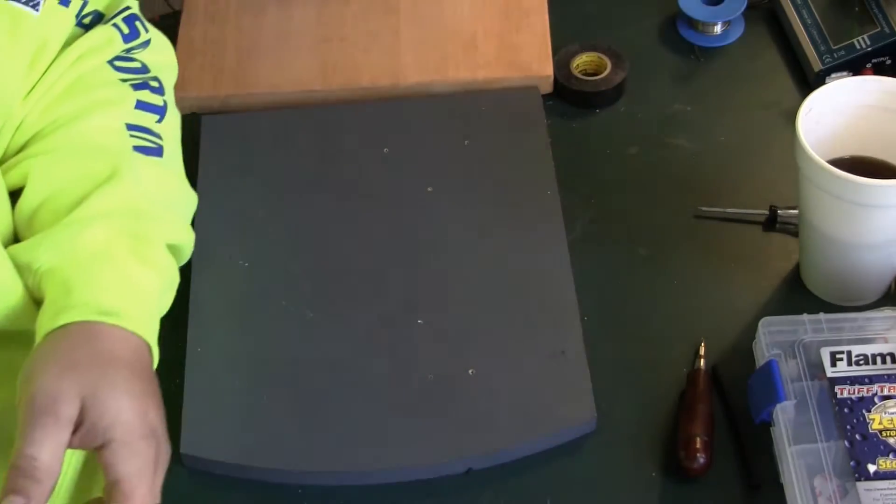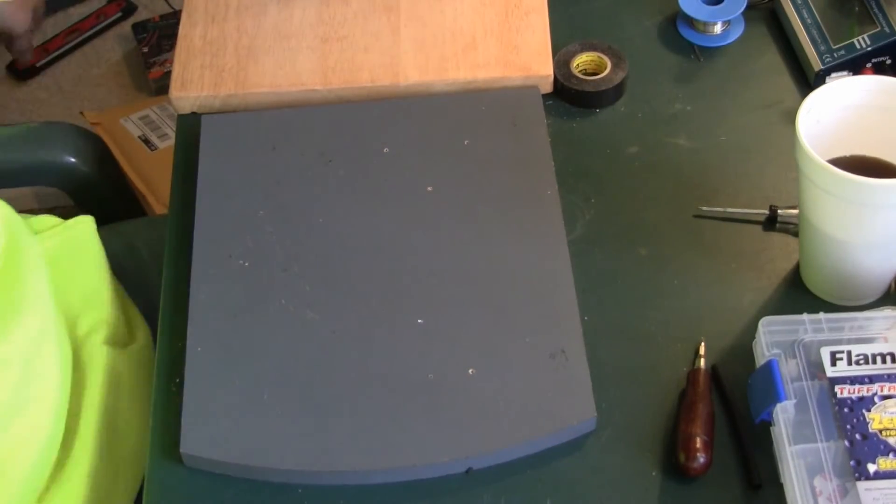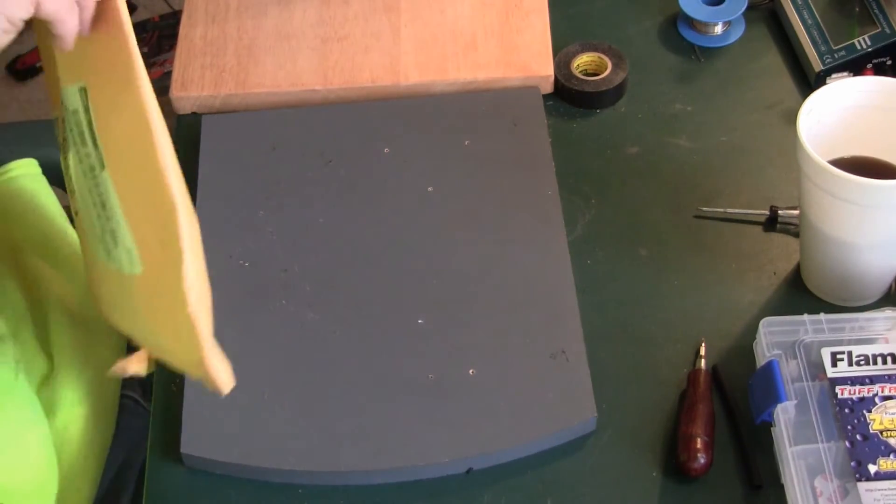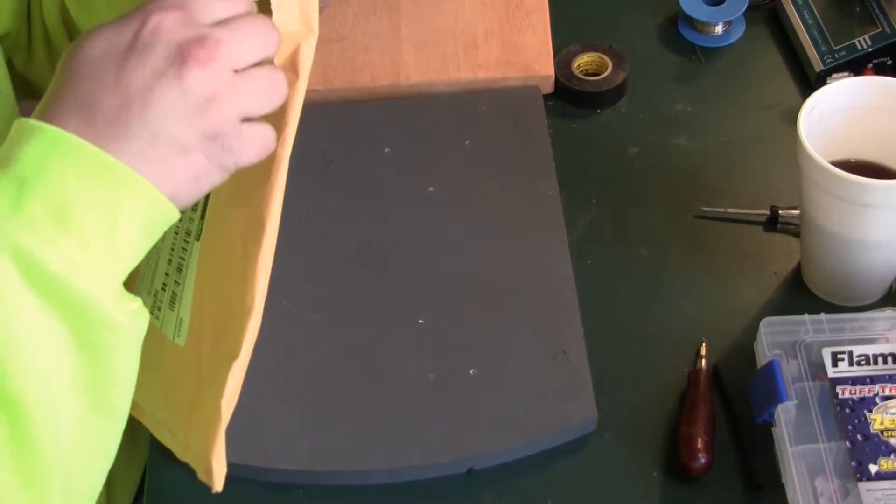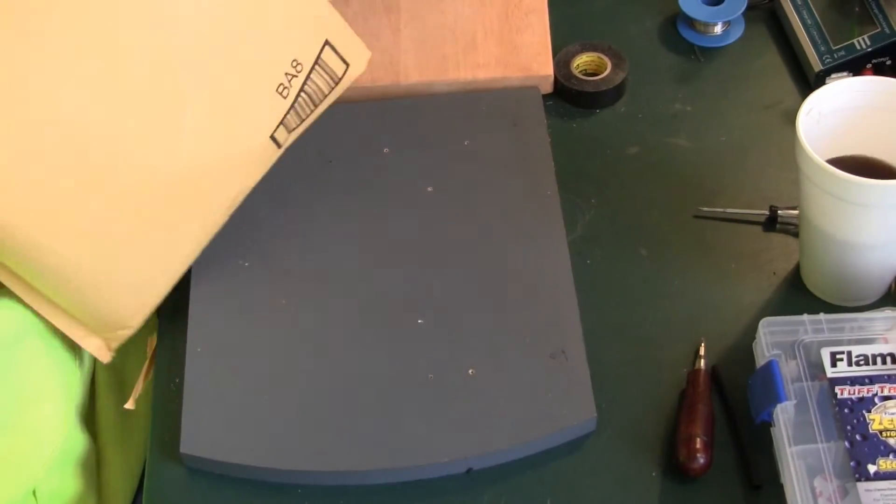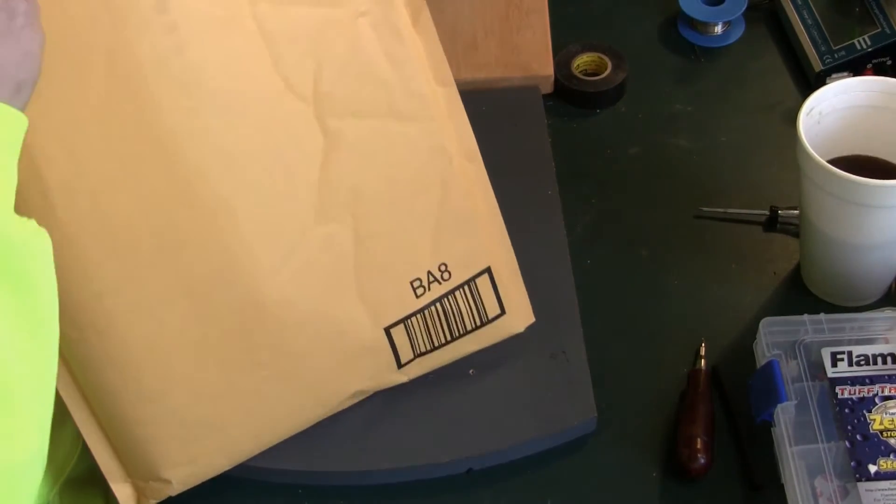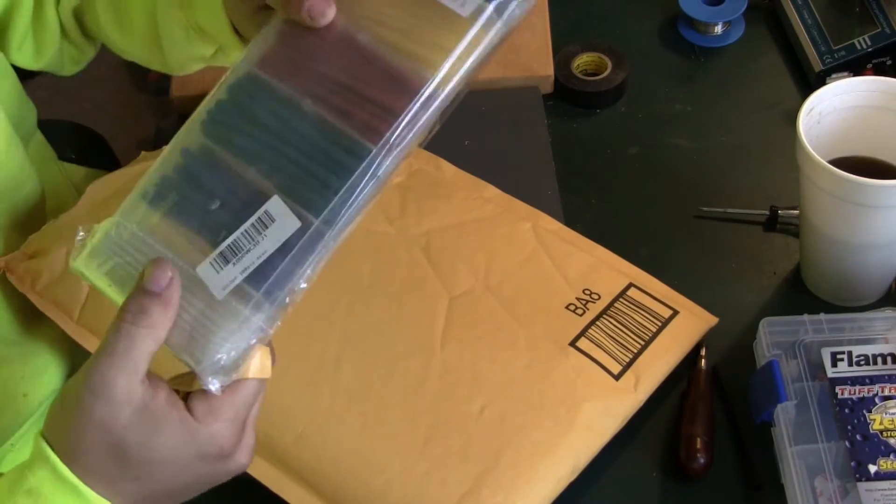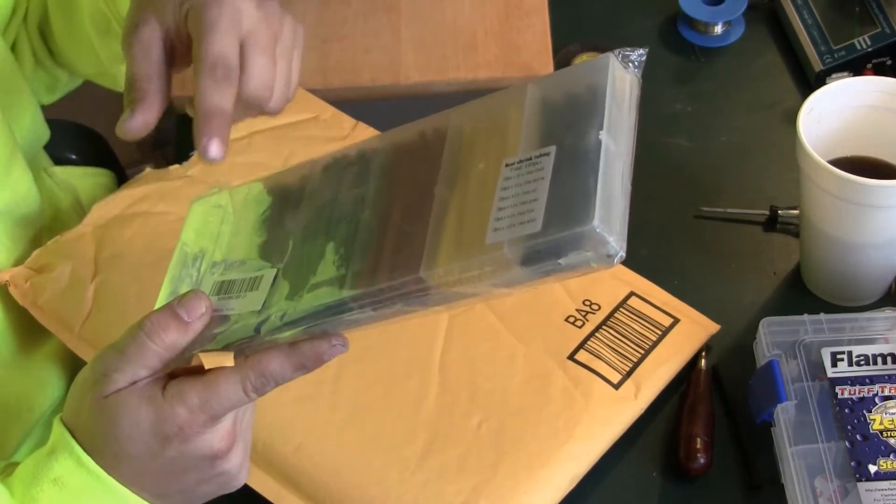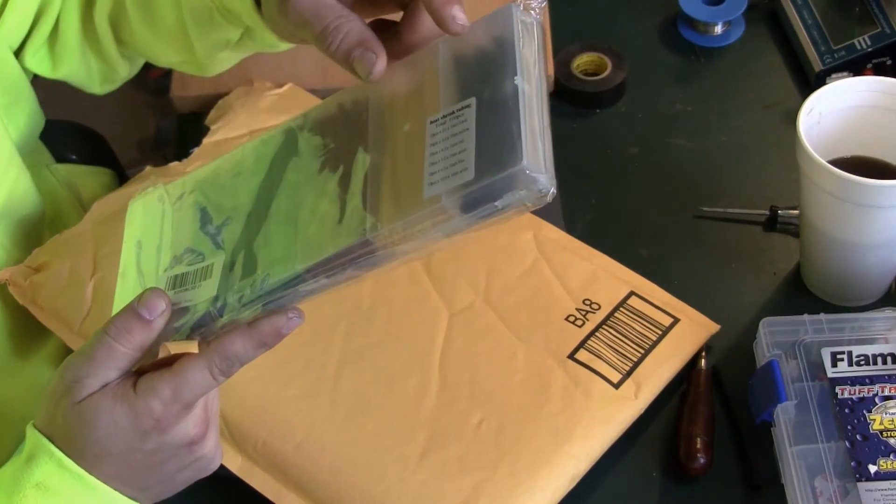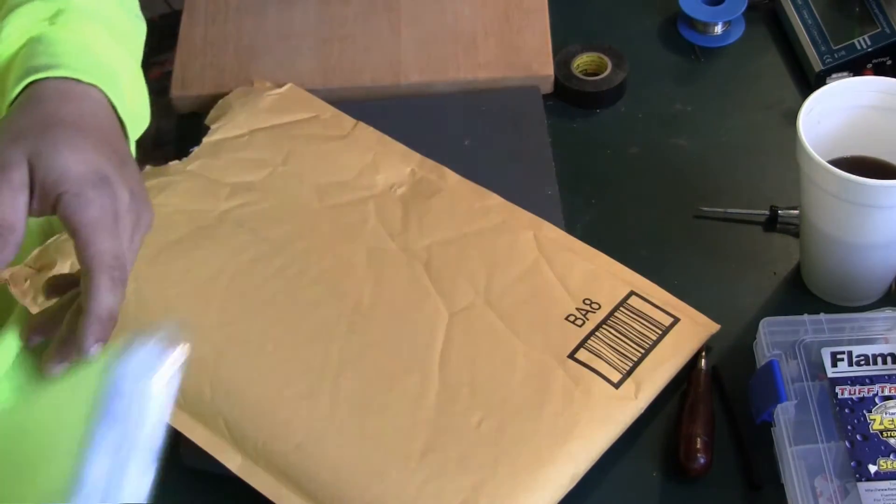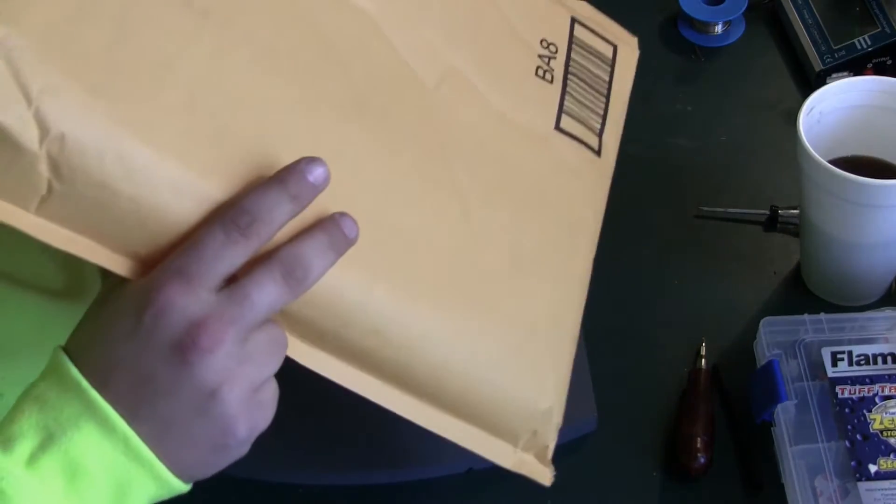Another manila envelope, what do we have? Package of heat shrink tubing, different colors. We got looks like two or three different sizes and then we have different colors as well. I'll be using some of that for the build.